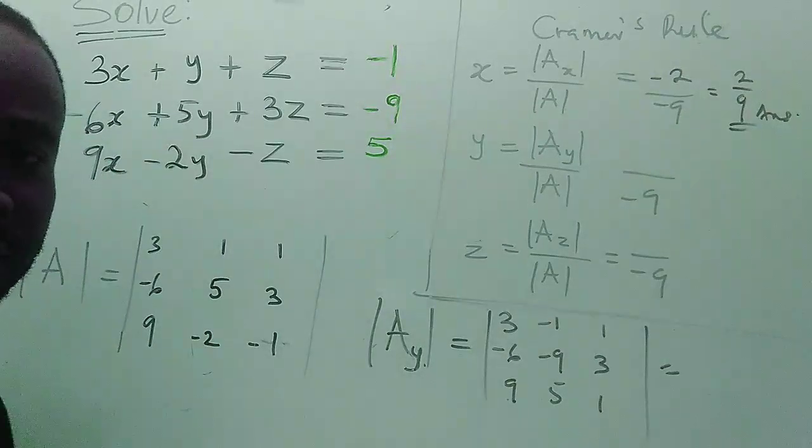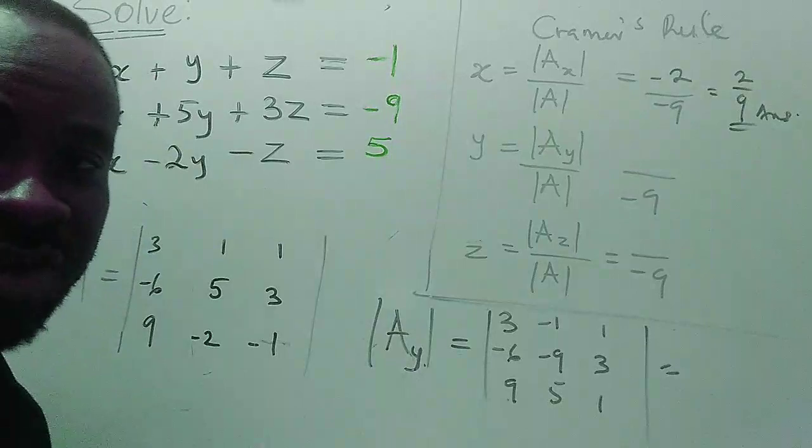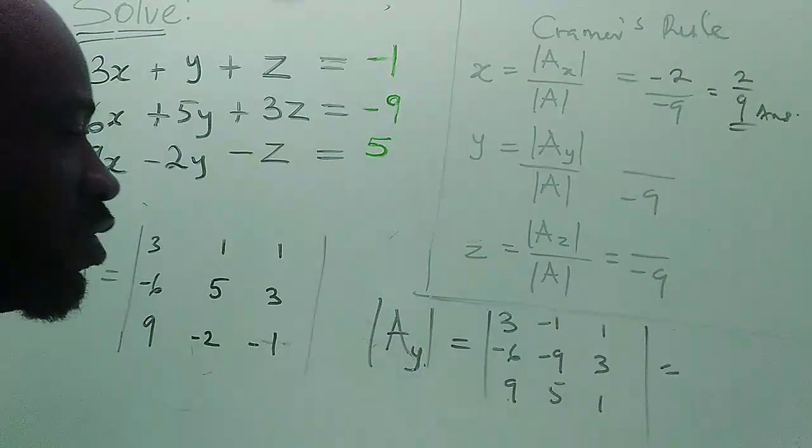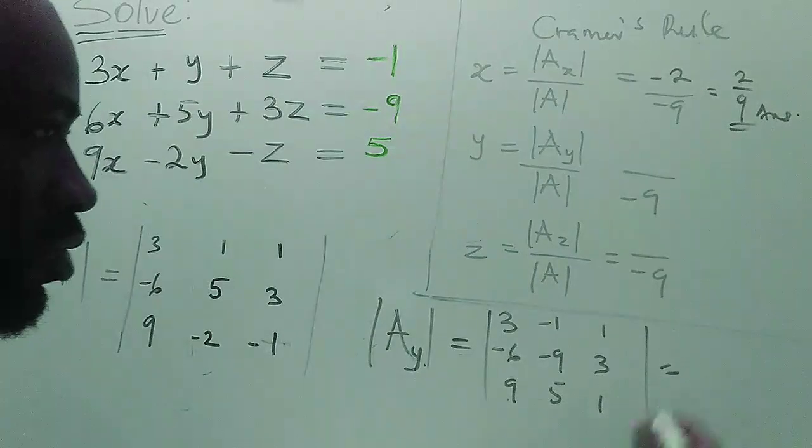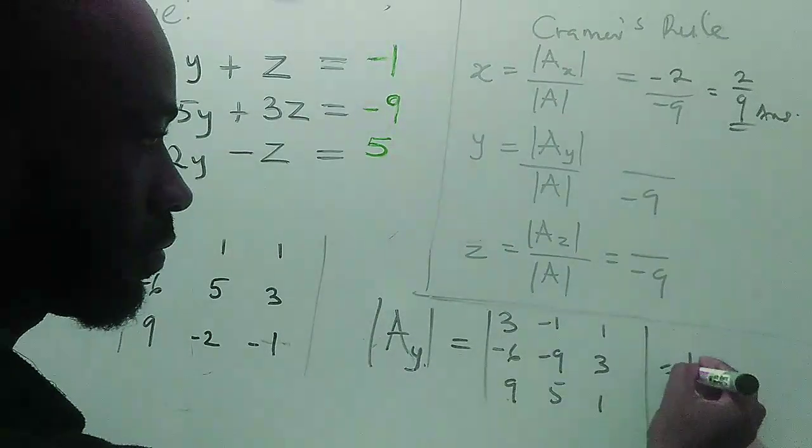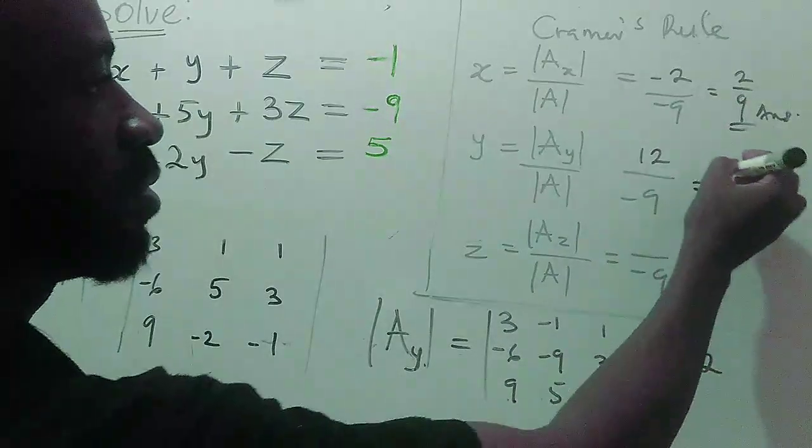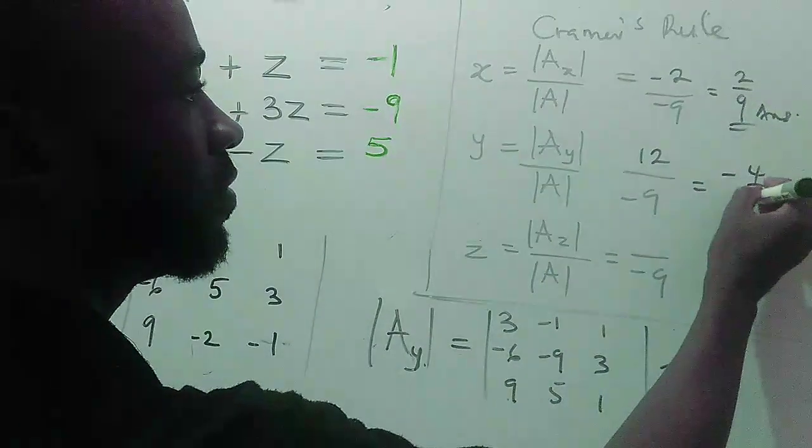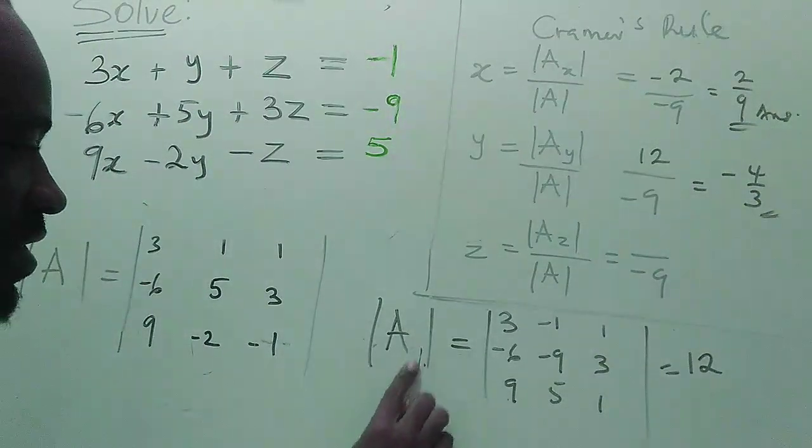We do the same thing, we apply the determinant either using Sarrus rule, expansion by minors. And when we do that, this is going to give us 12 as our answer. I'm going to put 12 here. Our answer here becomes minus four over three as our y.